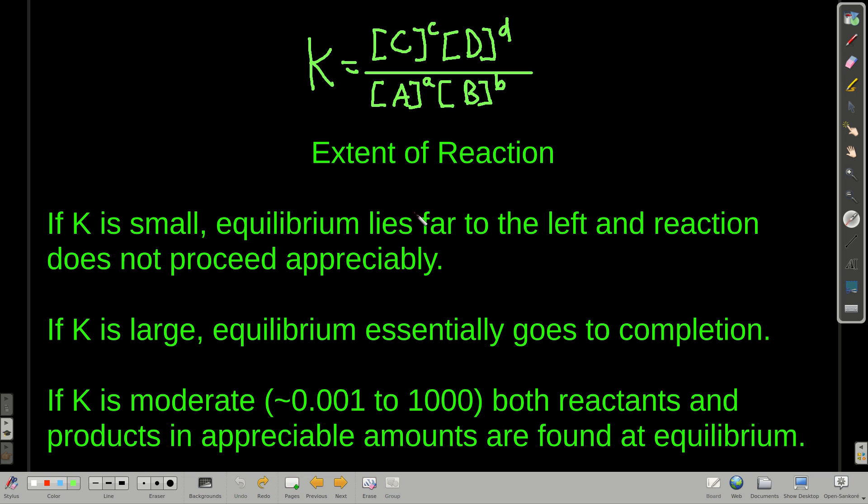Extent of reaction, another topic. This is talking about K, so we're finished with Q for the moment. Now, we're at equilibrium, and we have a value for K, the equilibrium constant. What we can say is that if K is small, that means that at equilibrium, the numerator is small and the denominator is big, which means that there are a lot of reactants and very few products around. And what that means is that that reaction really doesn't go very far to the right, and basically it stays unreacted.